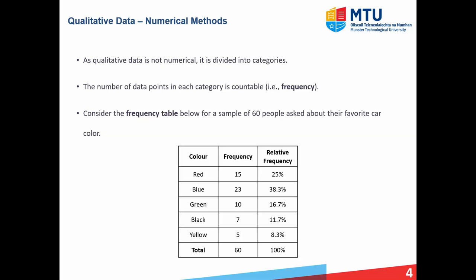A typical way to look at qualitative data is to represent it in a frequency table. For example, in the table below, we have a sample of 60 people who were asked about their favorite car color. We can break car color up into different categories — red, blue, and so on — and then count up the number of people who have that particular favorite car color. So in the table, we have 15 people who like red, 23 like blue, and so on.